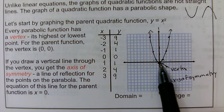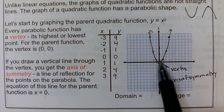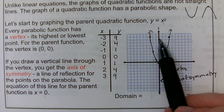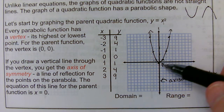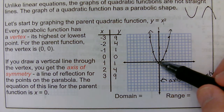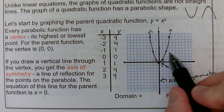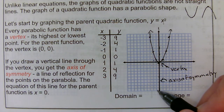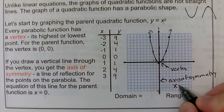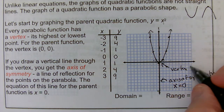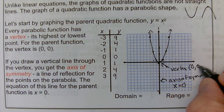If I go 1 to the right and 1 to the left, these two points are reflections of each other. 2 to the right, 2 to the left. 3 to the right, 3 to the left. Parabolas always have symmetry across that vertical line, so if you can find points on one side of the vertex, you can reflect them across the axis of symmetry to get more points. In the parent function, the axis of symmetry is x equals 0, and the vertex is the point (0, 0), the origin.